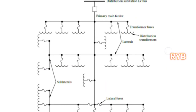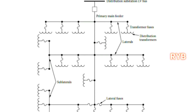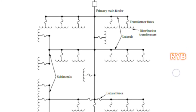To draw the diagram, first draw the distribution LV bus and the primary main feeder. After that, laterals and sub-laterals are added. Laterals may be 3-phase or single-phase, and sub-laterals may also be 3-phase or single-phase.